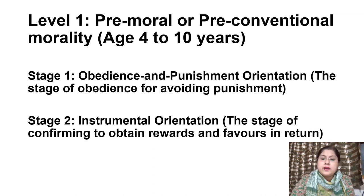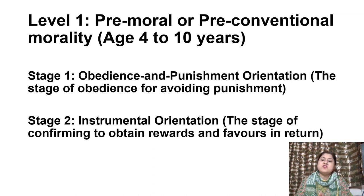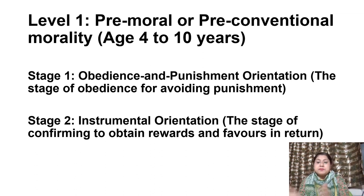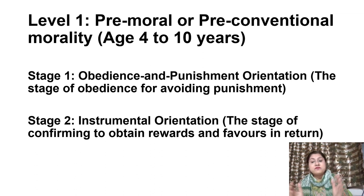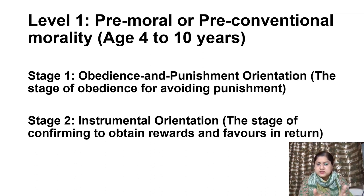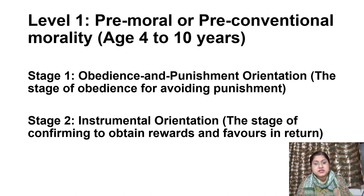Under pre-conventional morality, a child's sense of morality is externally controlled. Children accept and believe the rules of authority figures such as parents and teachers. A child with pre-conventional morality has not yet internalized society's conventions regarding what is right or wrong, but instead focuses largely on external consequences that certain actions may bring. Stage 1 focuses on the child's desire to obey rules and avoid being punished.